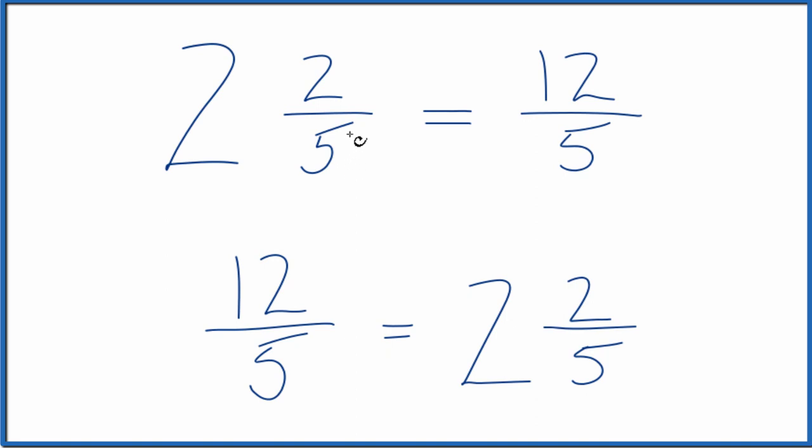So the mixed number, 2 and 2 fifths, equals the improper fraction, 12 fifths.